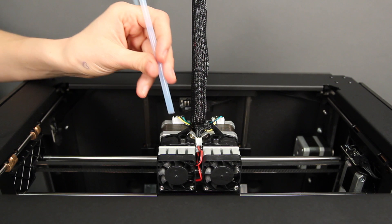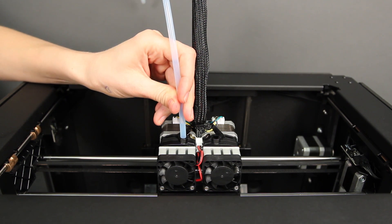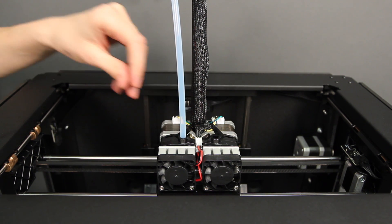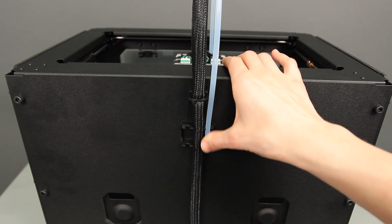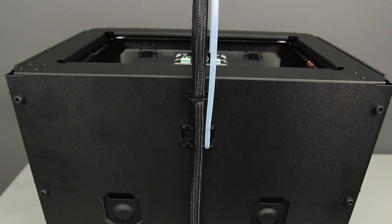After you've installed the handle, you can install the filament guide tubes and spool holders. Push one end of the filament guide tube into one of the holes in the top of one of the extruders and press the other end into the corresponding tube holder on the back of the MakerBot Replicator 2X.